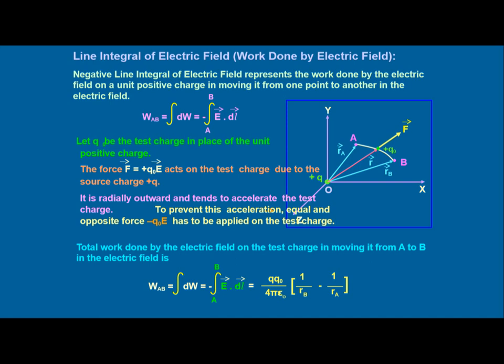As you see in this diagram, suppose there is a 3D frame of reference OX, OY, and OZ representing two points A and B, and there is a point charge plus Q naught established between them. We try to calculate the work done in bringing this charge from infinity to that particular point. The total work done by the electric field on the test charge moving from A to B is: W_AB = integral of dW = minus E dot dL = (q * q_naught) / (4 pi epsilon_naught) times (1/r_B minus 1/r_A), where r_B and r_A are the radius vectors of points B and A.